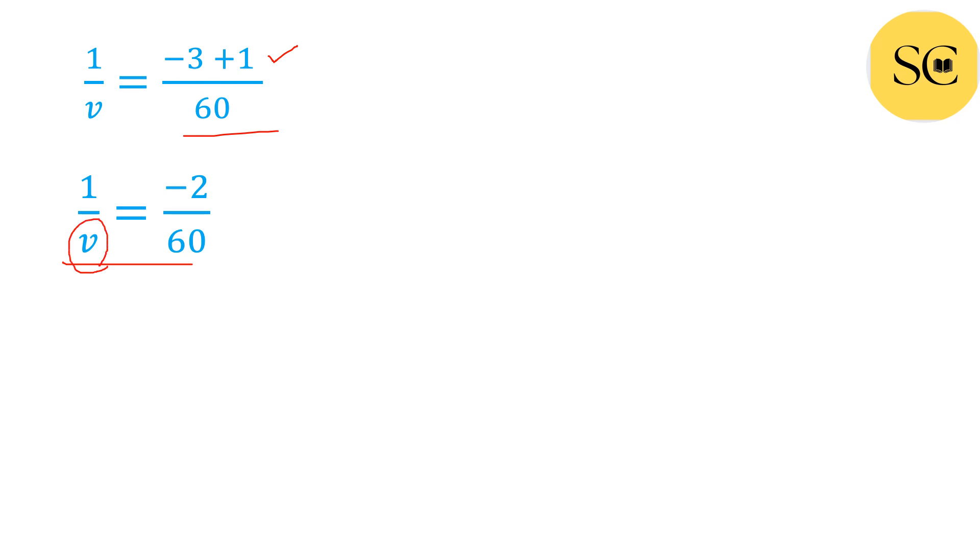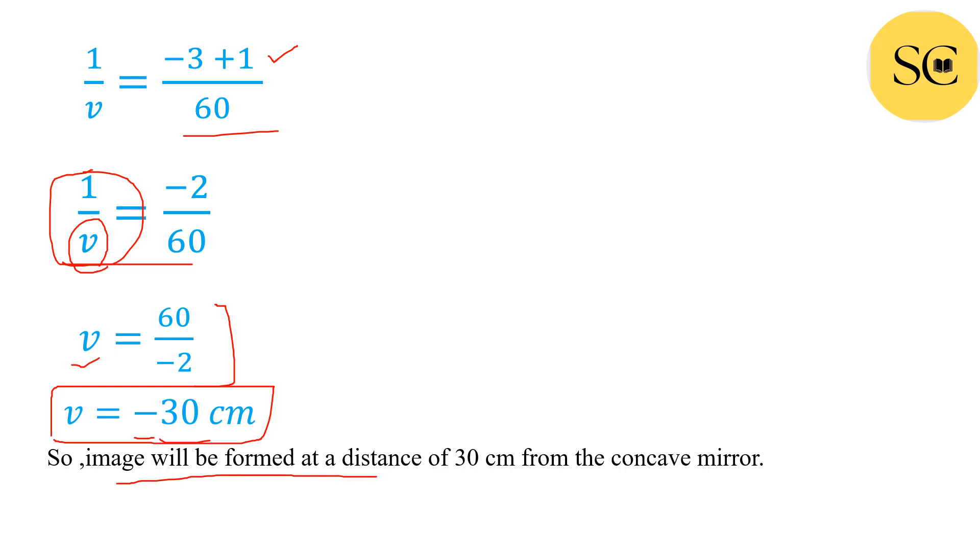We reverse this value. Now we will get v is equal to 60 upon minus 2. Now divide 60 by 2, we will get 30 and minus sign will also be written here. Image will be formed at a distance of 30 centimeter from the concave mirror.